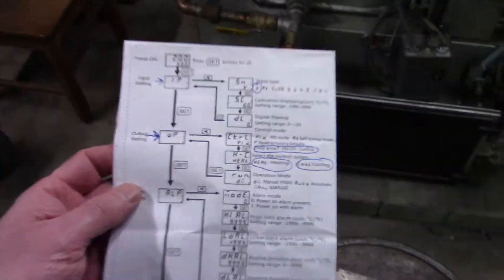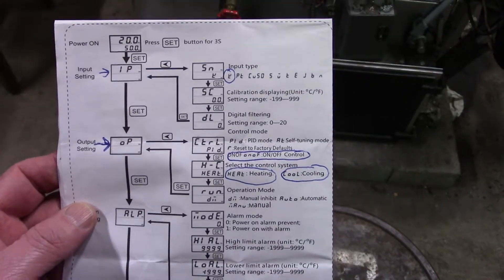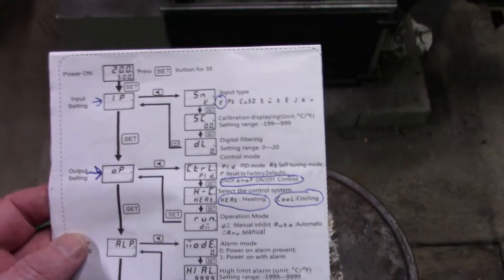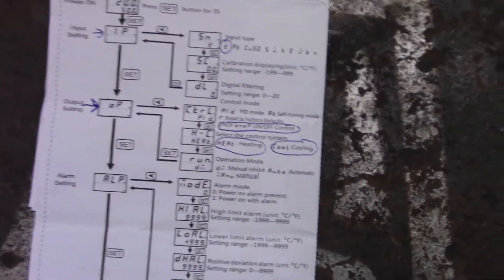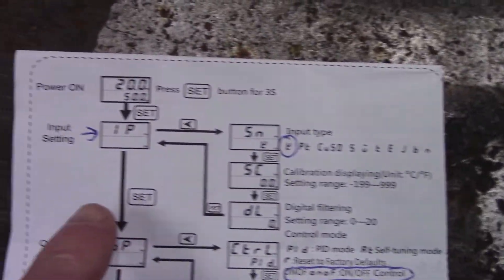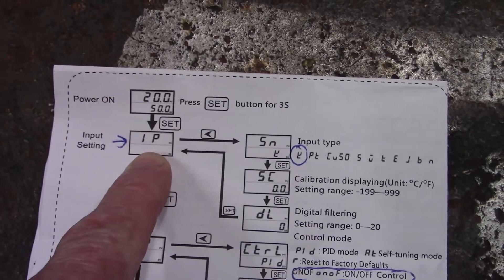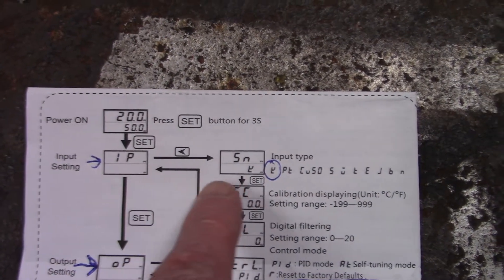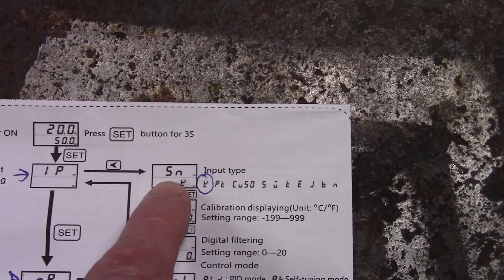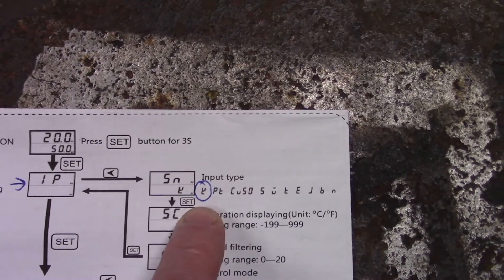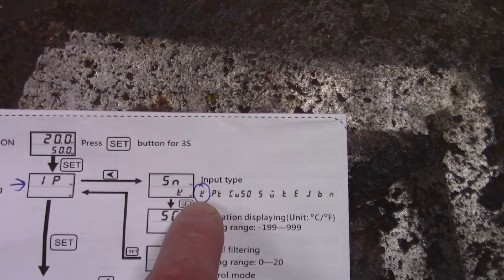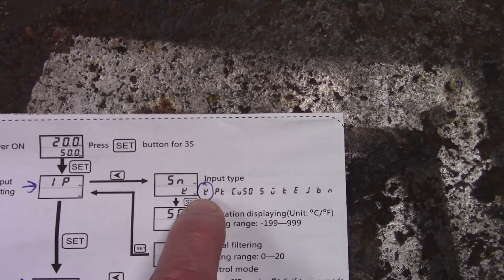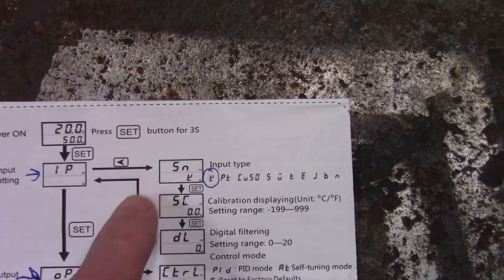So first thing I look at is this menu tree here. Basically what we're going to do is you need to go into the IP menu and make sure SN is set to Y. Y is a K type thermocouple and that's what most of these come with so that's what you want.